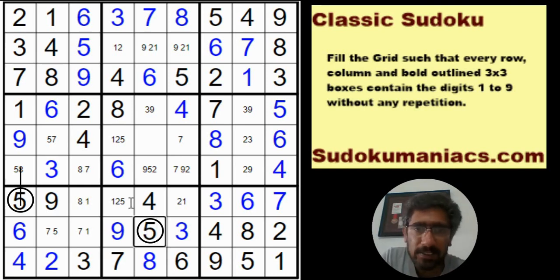And now because we have eliminated the possibility of 5 from there, hence we have no place for a 5 in row 6.